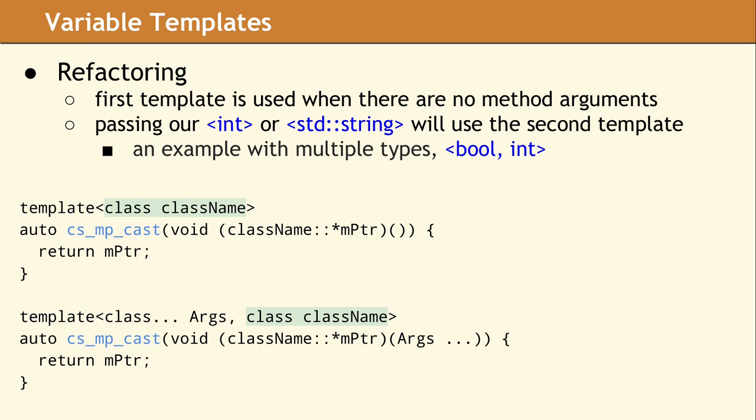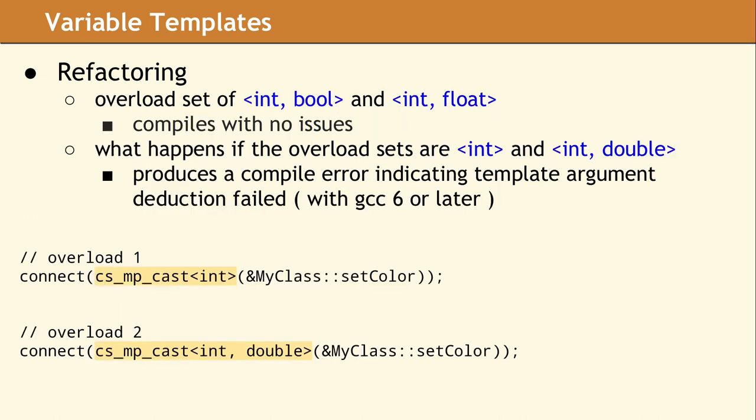These two free functions provide a correct solution for almost every set of data types. Sadly, this design failed in an odd way. If the overload set for setColor is int comma bool and the other one is int comma float, everything works fine and the program compiles.